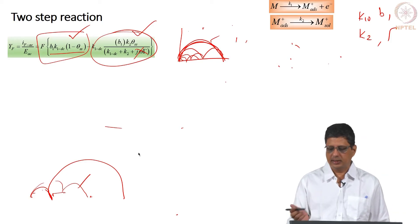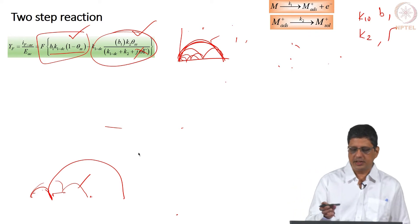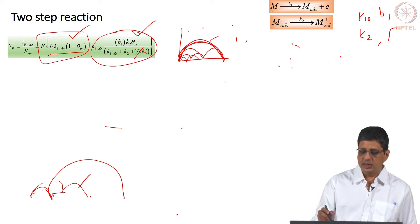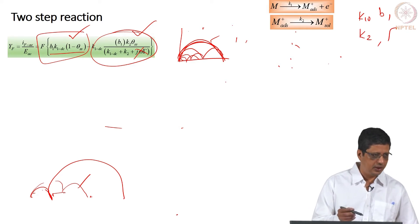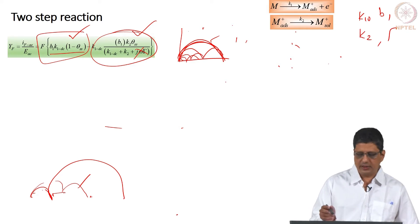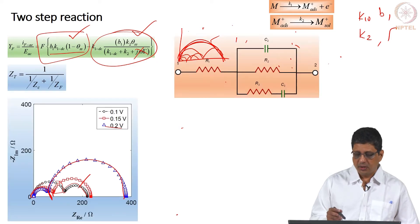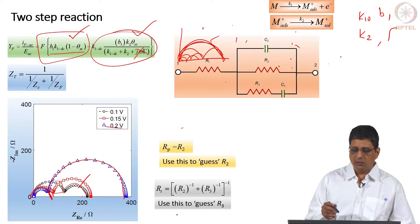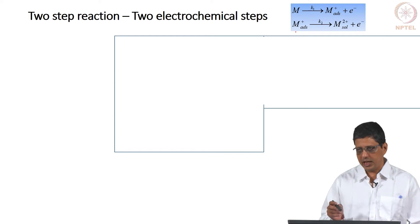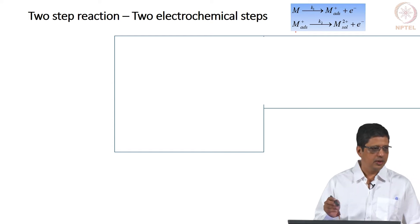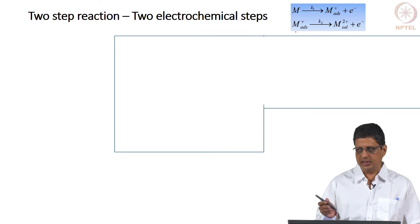In the last class, we saw an example of a 2-step reaction: metal going to metal-plus adsorbed, and then metal-plus adsorbed going into the solution. We derived the expression for the impedance for this reaction. What I want to do today is take a similar reaction and I would like you to try getting the impedance expression for this — I will guide you through the steps.